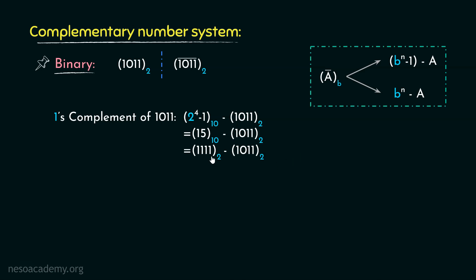So: 1 minus 1 is 0; again 1 minus 1 is 0; then 1 minus 0 is 1; and finally 1 minus 1 is 0 again. So the 1's complement of 1011 is 0100. Now this is the conventional approach. Apart from this, there is a shortcut to it.